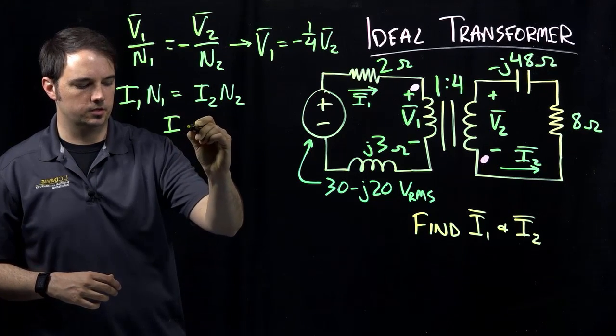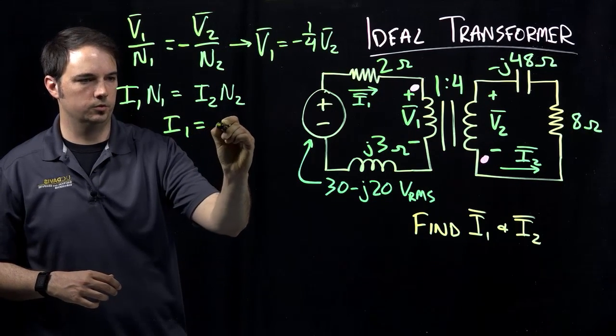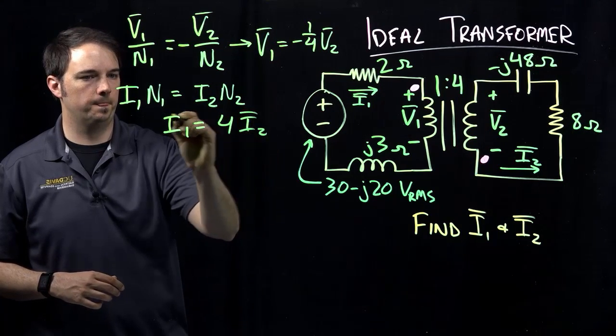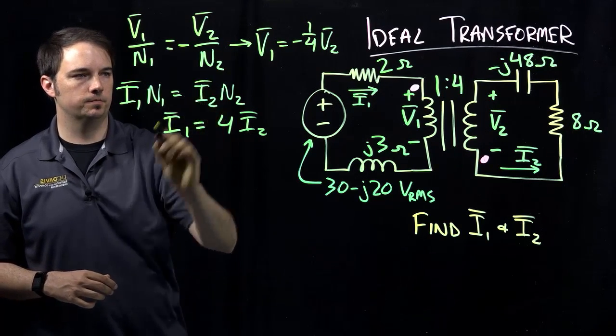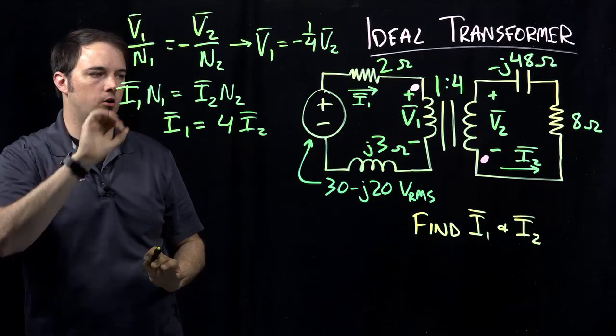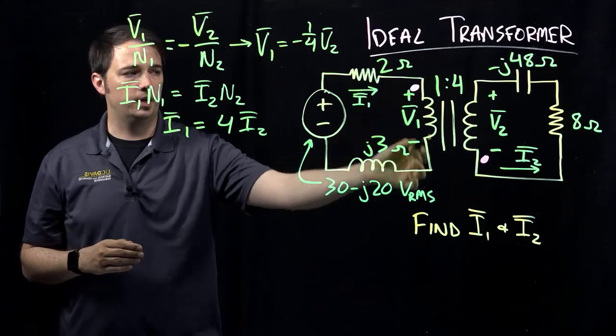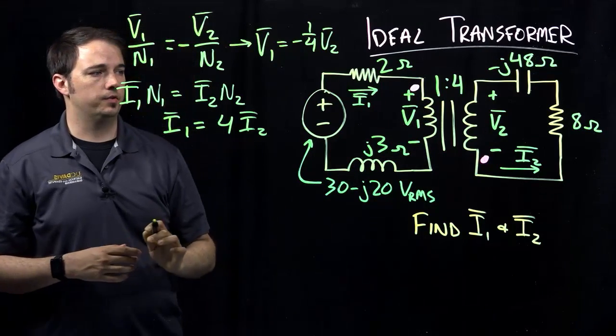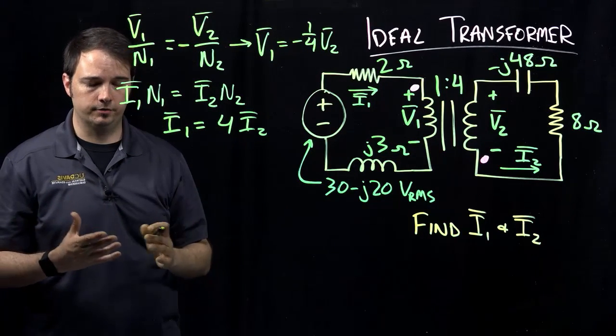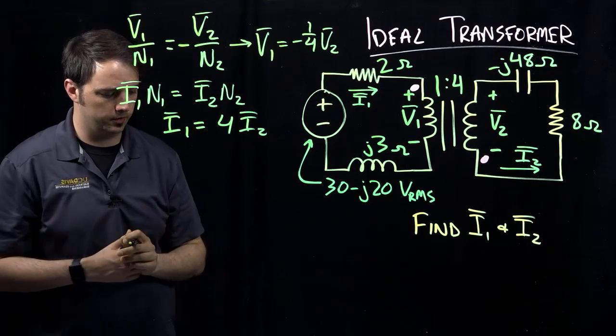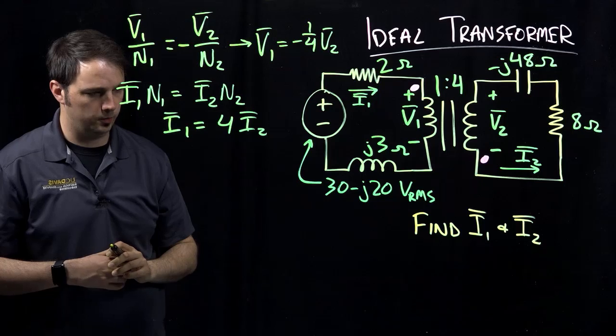So this then tells us how to relate I1 is going to be equal to four times I2. Okay. As such. So again, these two relationships are specific to the case when we have the ideal transformer as indicated by having the two bars here that just helps simplify a lot of transformer types of problems because this really gets us to a much more quicker of a relationship that we can work with.